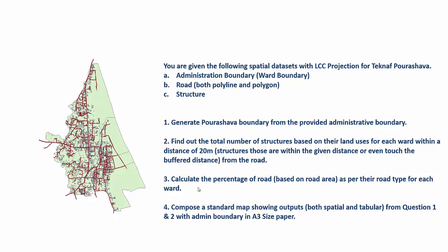Then I have to calculate the percentage of road based on road area as per road type for each ward — so in each ward, how many roads are there based on road area, and for that we will be using polygons. Then we have to compose a standard map showing output, both spatial and tabular, from questions 1 and 3, on A3 size paper.